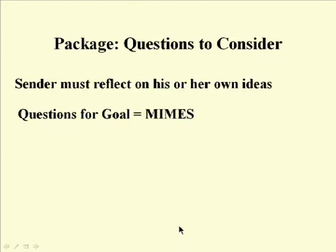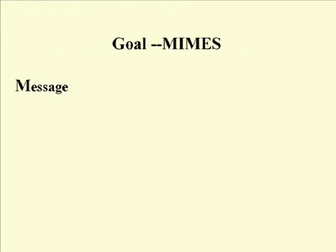The first thing you want to think about is, as the sender, you have to look into your own mind to understand what your goal is. The questions that help you understand your goal deal with MIMES. As you make your package, thinking about MIMES should help you begin to develop a good understanding of what can go into that package. The first element, M, is message — what it is you're trying to convey, what you want to say to the person or group that you are targeting.